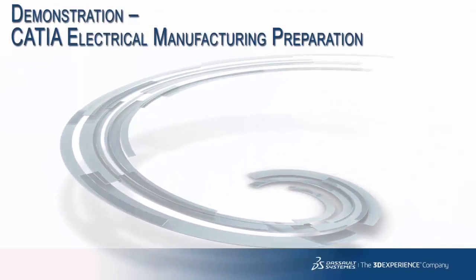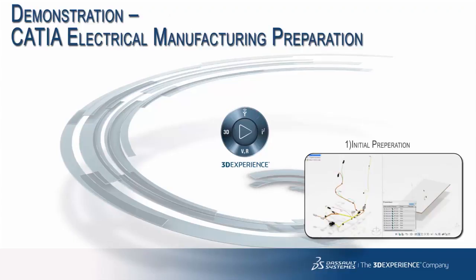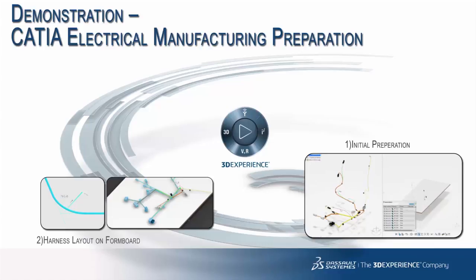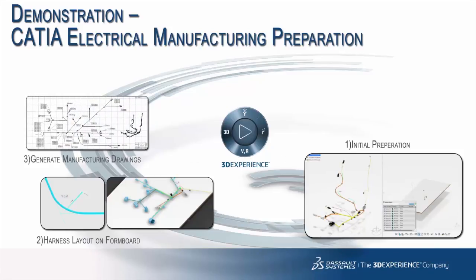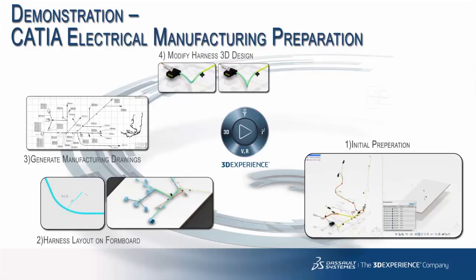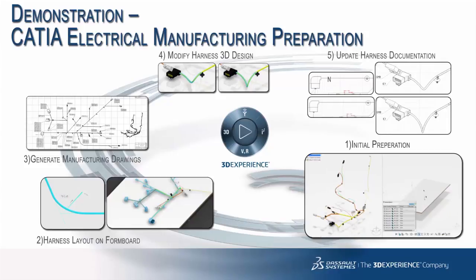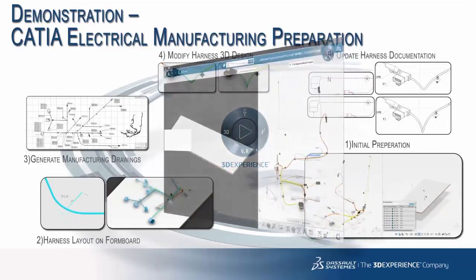Now I'm going to turn it over to Dimitri to talk about the demo. If we look at the demo, we first will do an initial preparation starting with the 3D, creating a manufacturing document which is completely linked to the 3D. Then we lay out the harness on the formboard using very simple mechanisms — dragging and dropping — to align it and to optimize the layout. Generating the manufacturing drawings, and whenever there is a change in the 3D we do a modification and update the harness documentation.